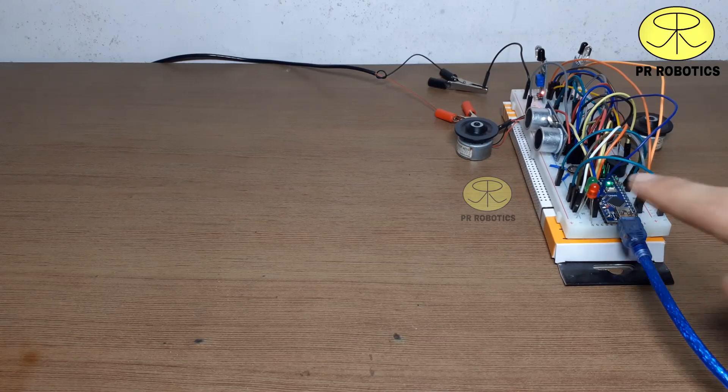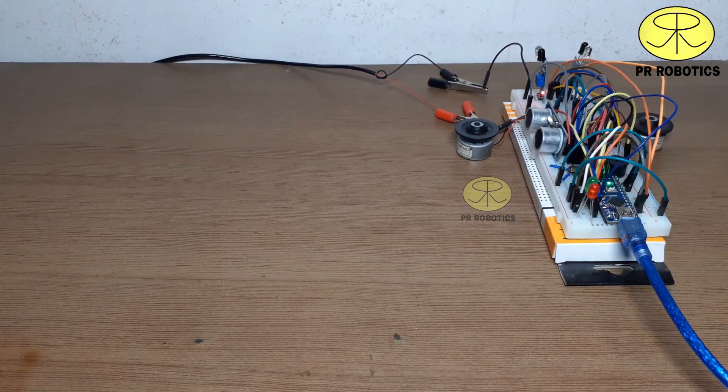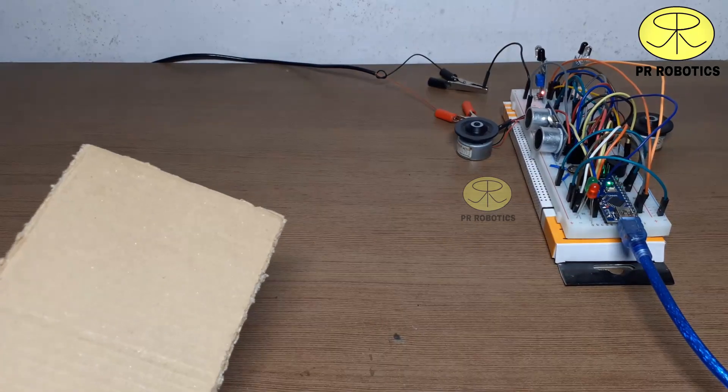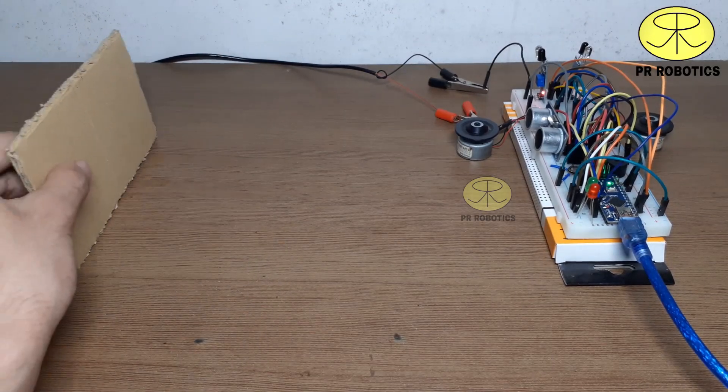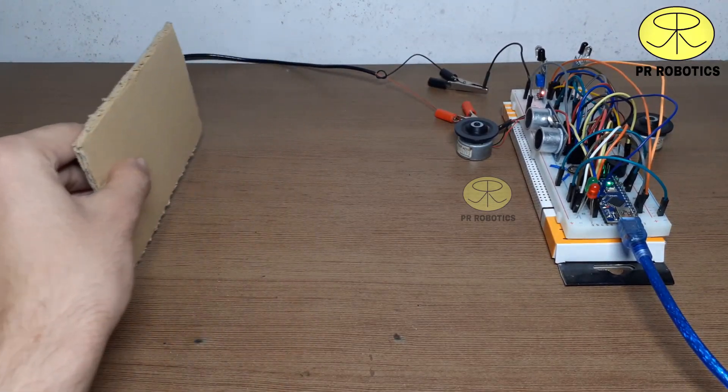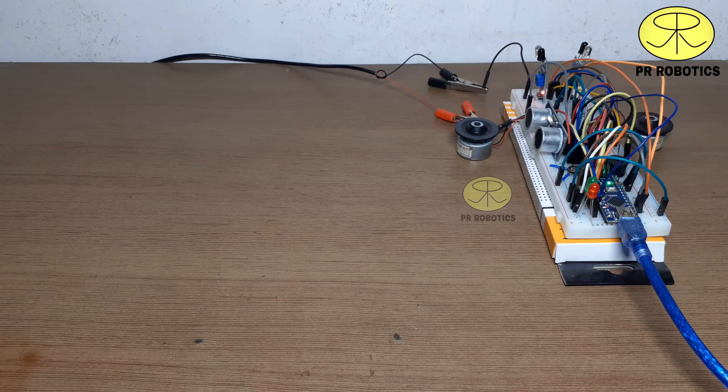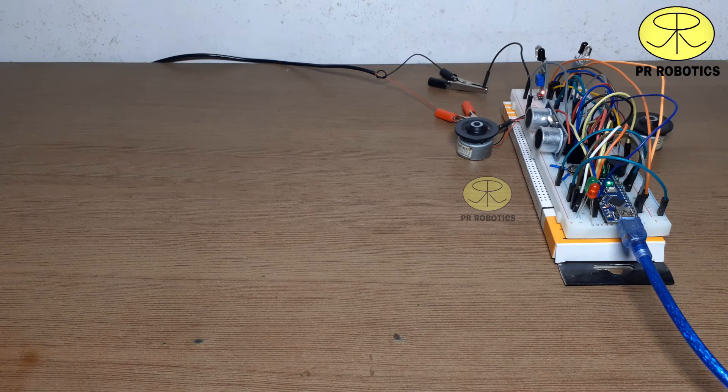As you can see, the motors start working. I am using this cardboard to show the obstacle. I have used different sounds for different distances, so that when the person comes closer to the robot, the buzzer sound will change.